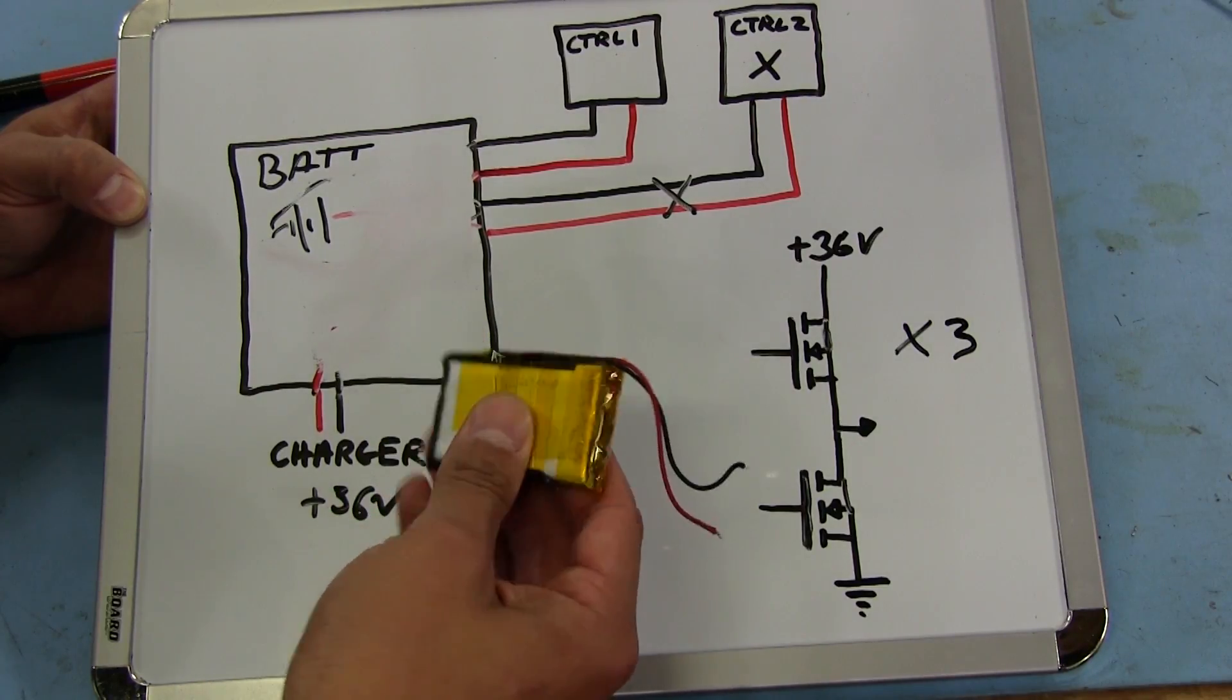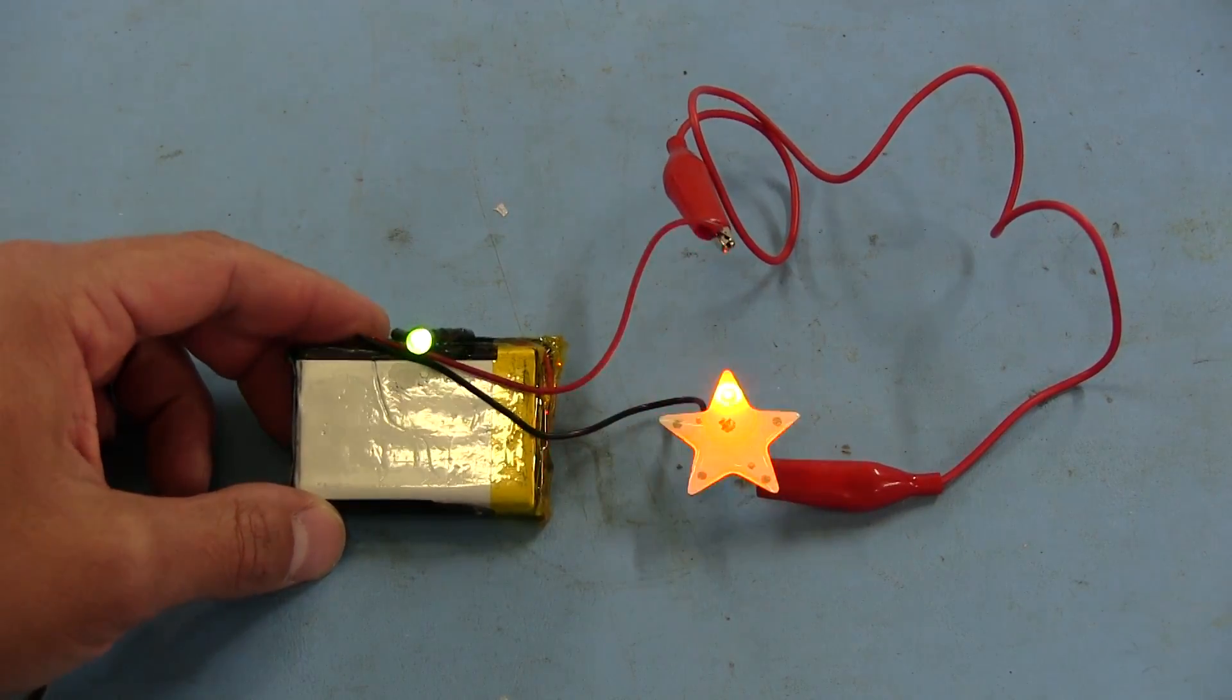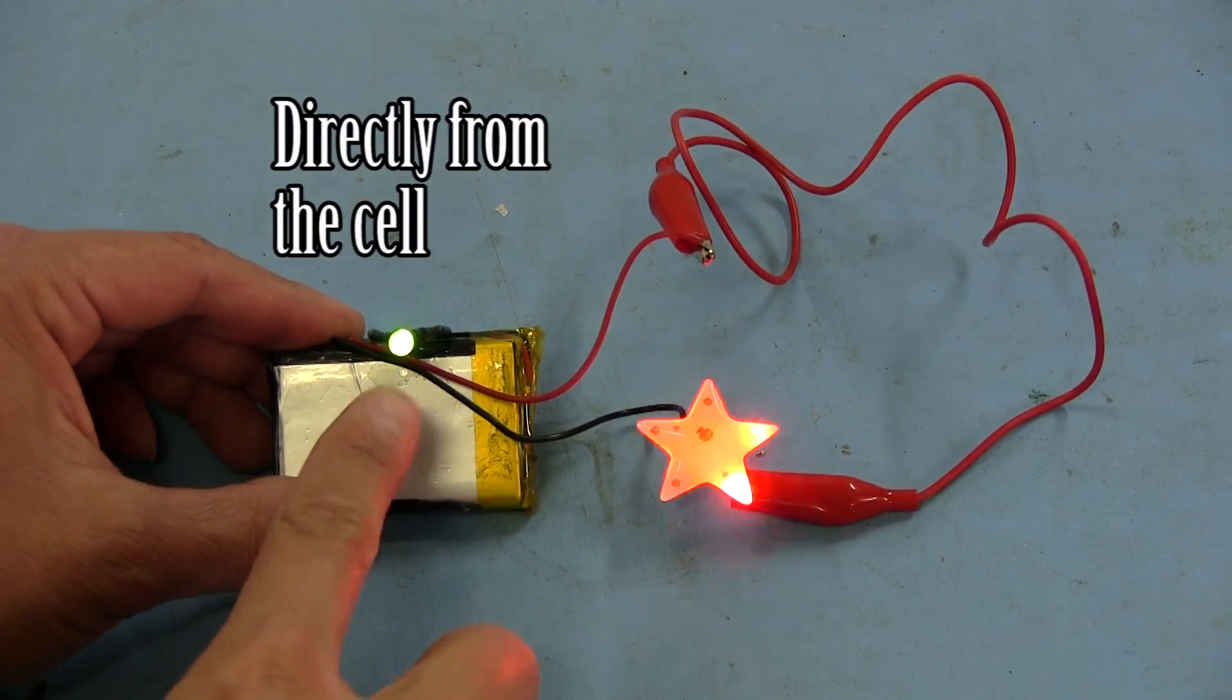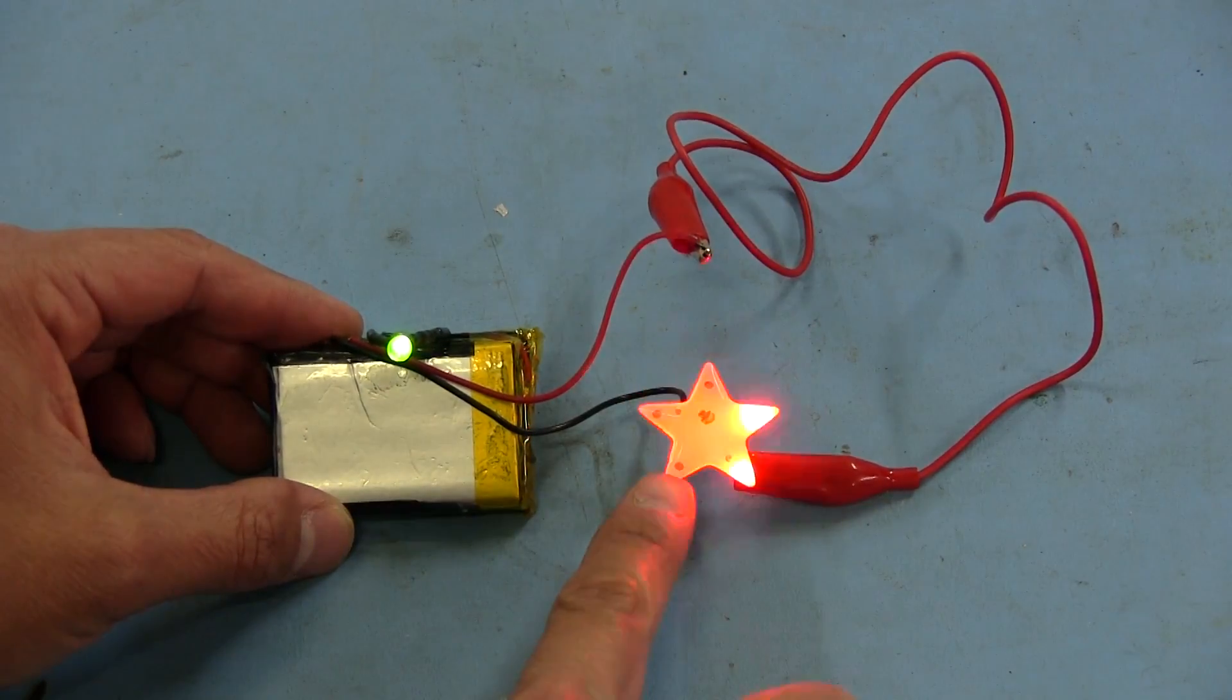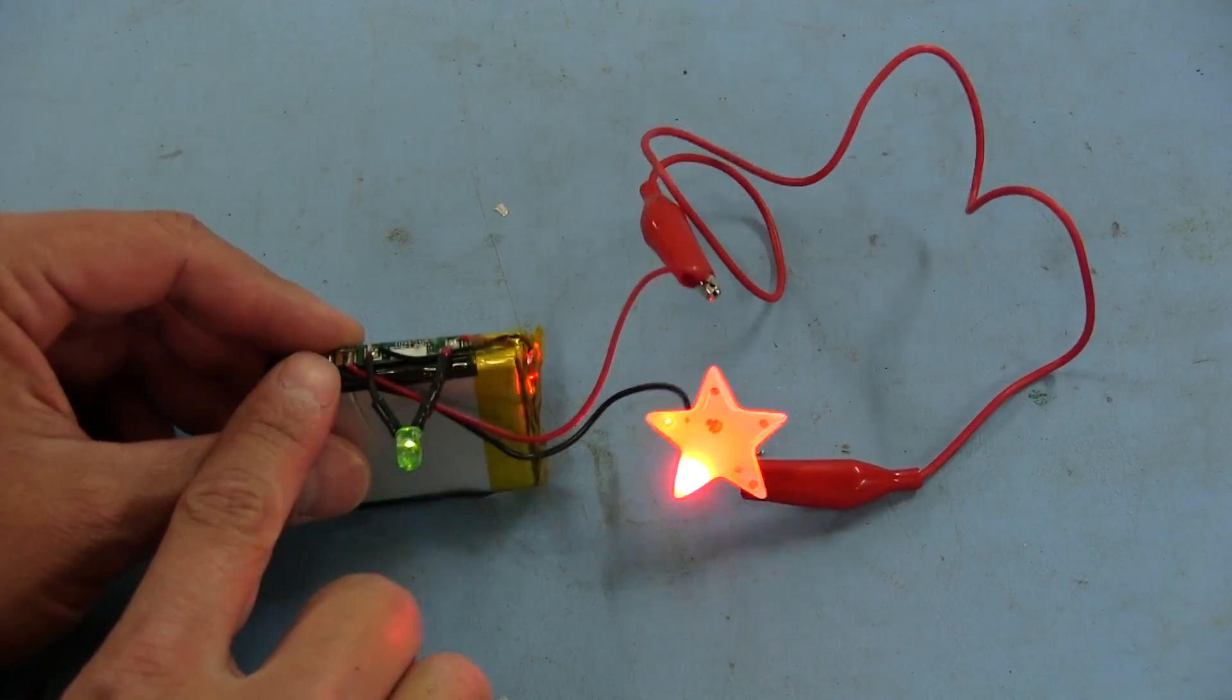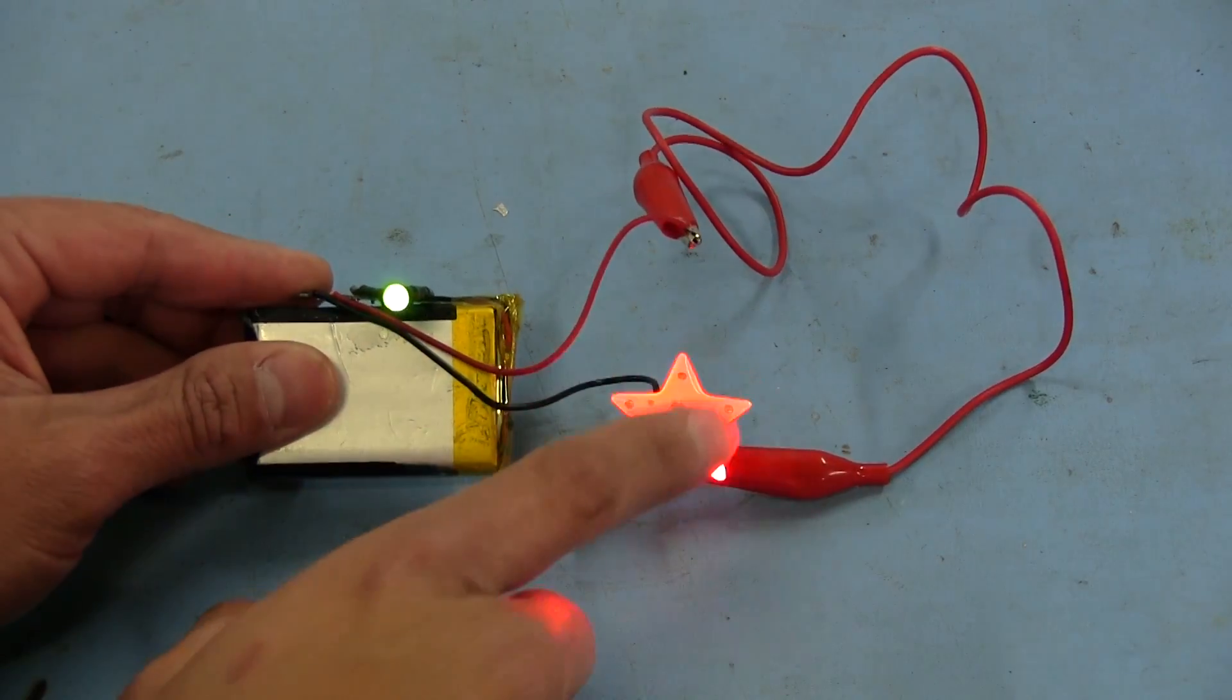Here's our quick and dirty little demo setup. This green LED that's soldered directly to the two wires coming off the battery is going to represent our battery. This little flashing star represents the controller board. Nothing fancy, the positive and negative out of the protection circuitry is going directly into this star.